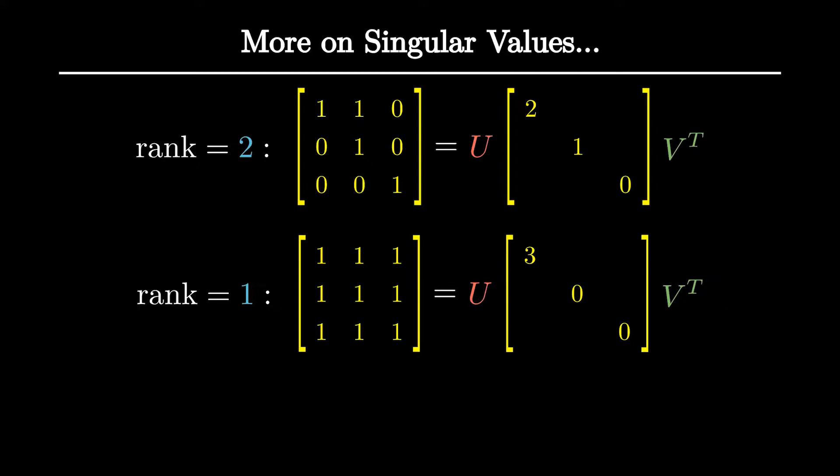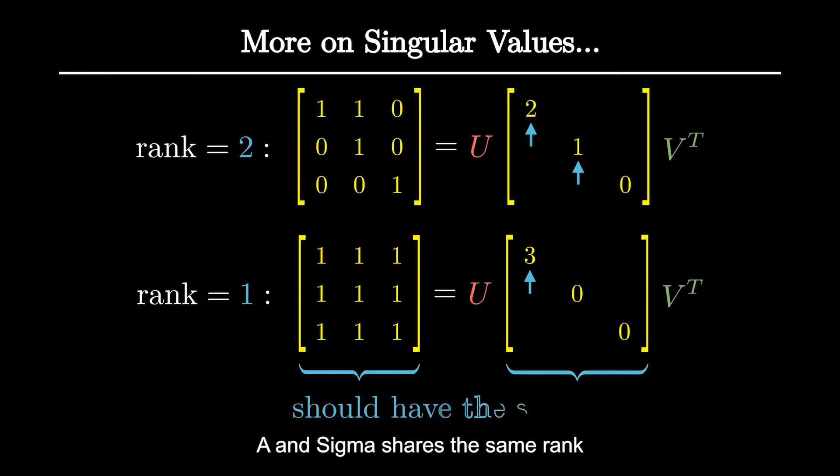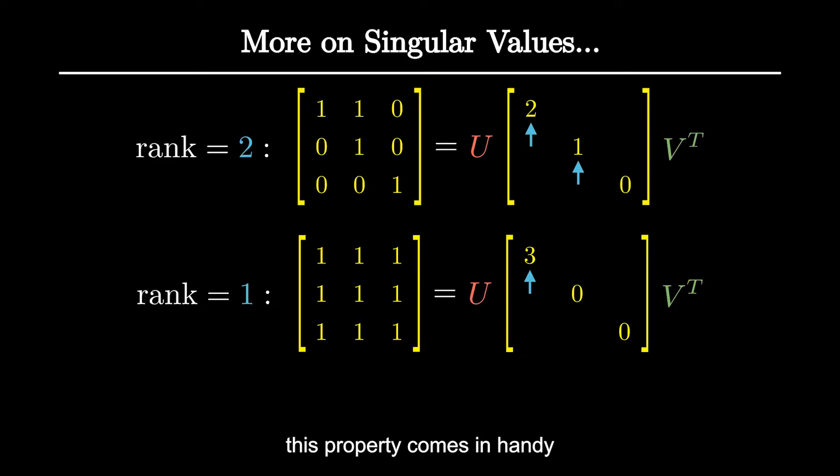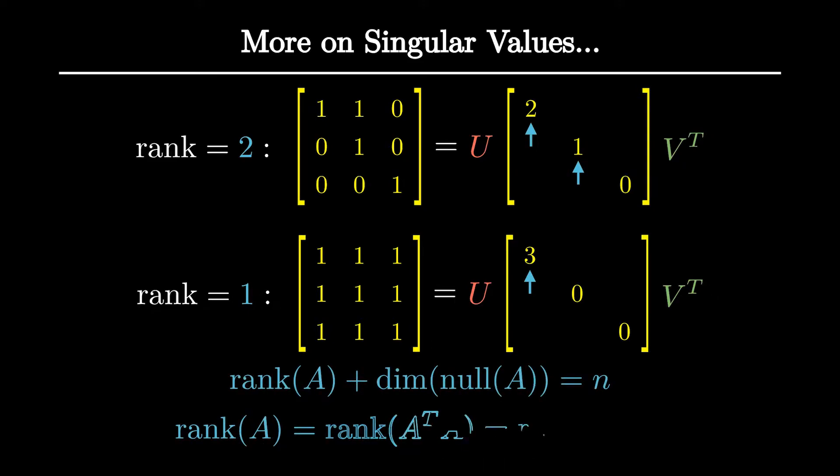In other words, if you'd like to find the rank of A, just count how many non-zero elements there are in sigma. This is simply because A and sigma share the same rank, since U and V are full rank. This property comes in handy while proving rank-relevant conclusions, during which we make use of the SVD of A.